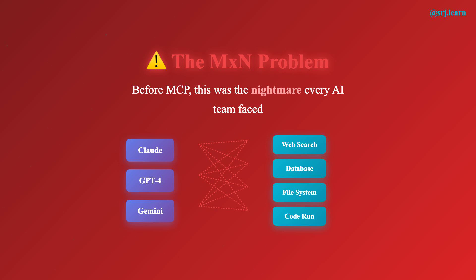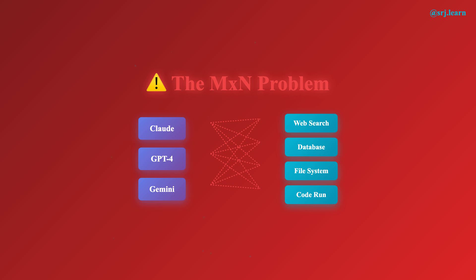It quickly becomes unmaintainable. Even worse, each connector has its own bugs, its own edge cases, its own maintenance burden. Update one tool? Now you have to update M connectors. Add a new model? Now you need N new connectors. This fragmentation was holding back the entire agentic AI ecosystem — developers were spending more time on plumbing than on building actual agent capabilities. We needed a universal standard, something like USB for AI agents: one interface that works everywhere. That's where MCP comes in.